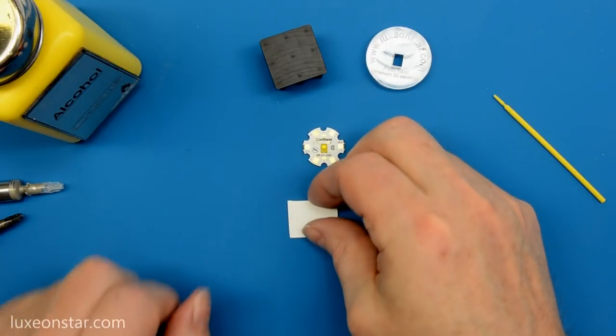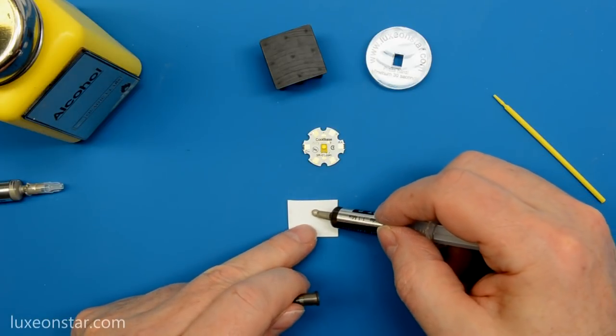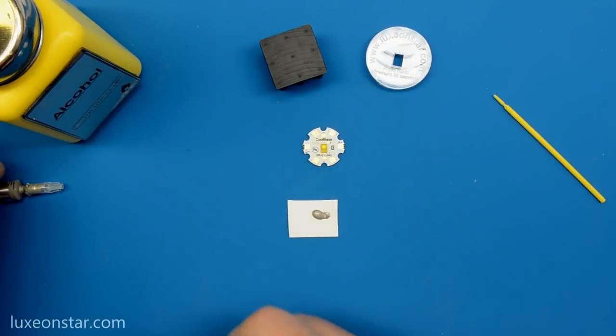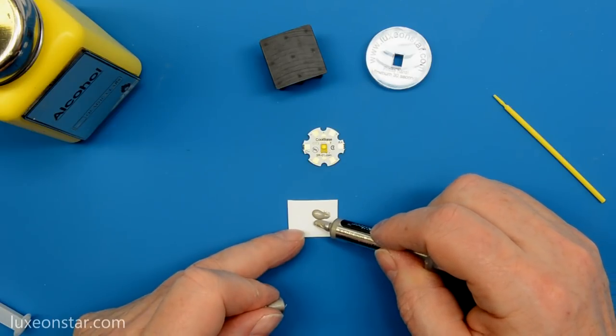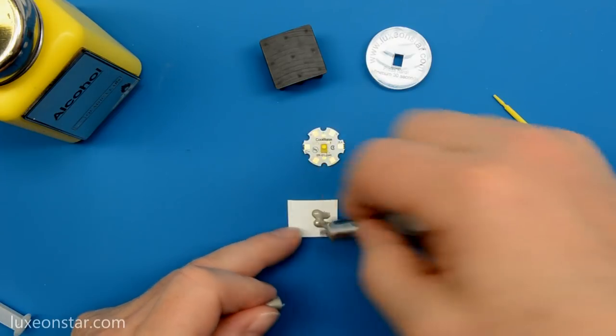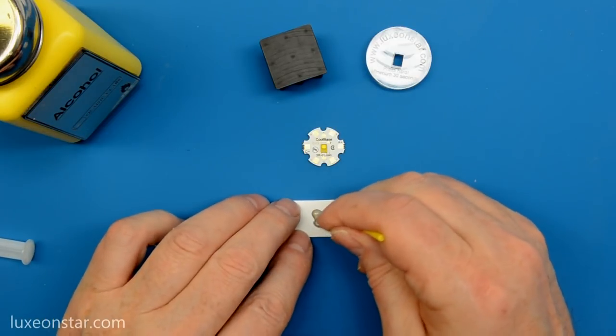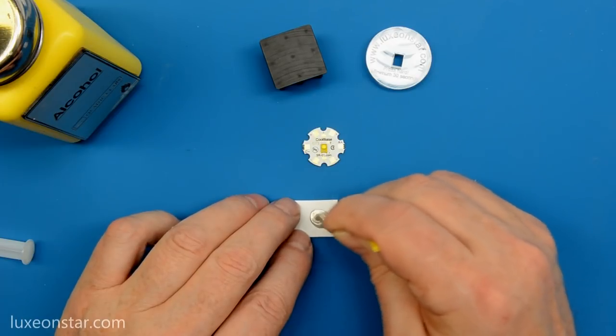So we're going to start by mixing up some adhesive on our mixing pallet. Squeeze out a small amount of the first part, and an equal amount of the second part, and then mix that up. Now this is obviously more than what we're going to need, so we'll just mix it up and just use exactly what we need for this. You want to mix it very thoroughly, stir for about 30 seconds or so.